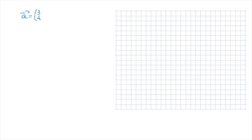Say we're given a vector a with components 3 and 4, and we're asked to find this vector's magnitude. A vector's magnitude is written as follows: we write the vector a in between two vertical bars, a bit like an absolute value. And this magnitude is equal to the square root of 3 squared plus 4 squared.